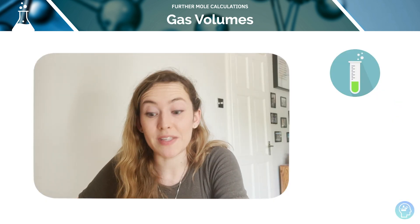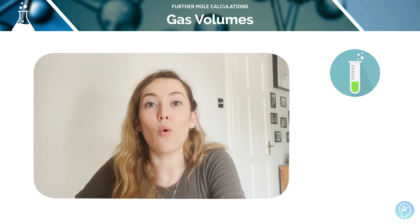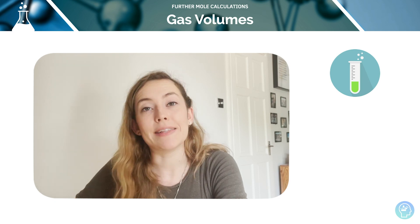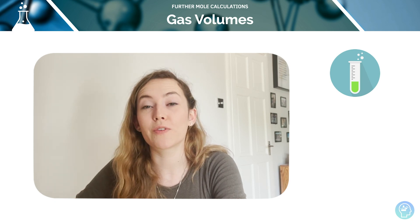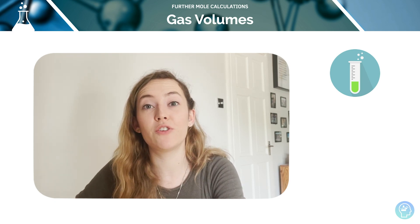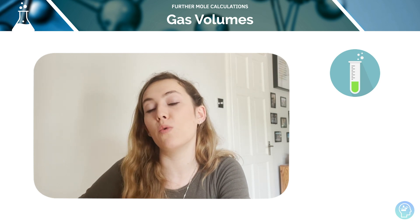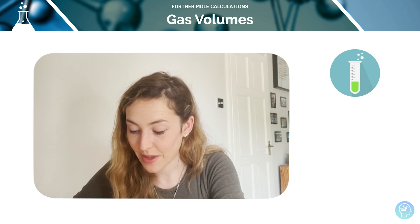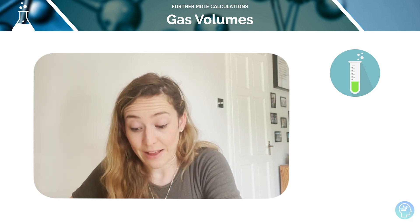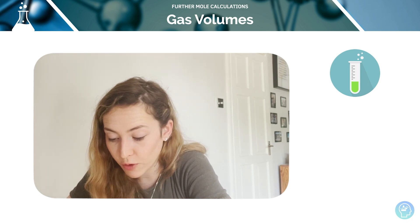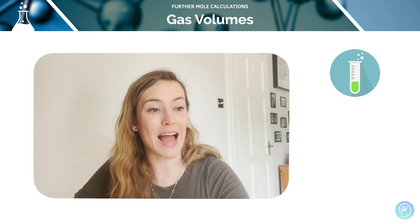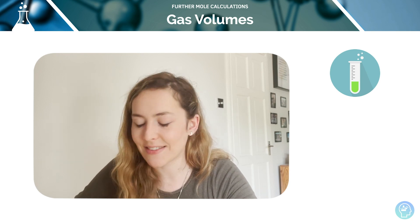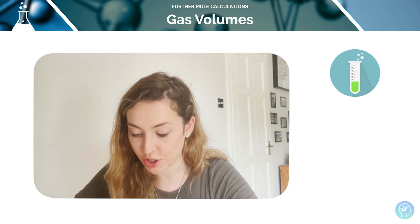Considering gas volumes now: Avogadro's law states that equal volumes of gases at the same temperature and pressure contain an equal number of moles. So 10 dm³ of nitrogen contains the same number of moles as 10 dm³ of oxygen — or indeed any other gas at that same temperature and pressure.